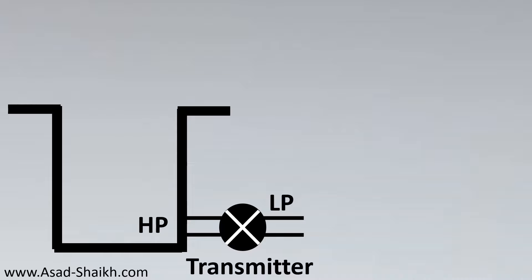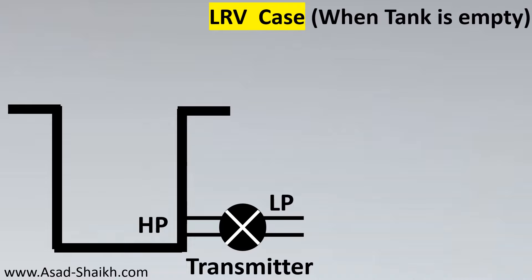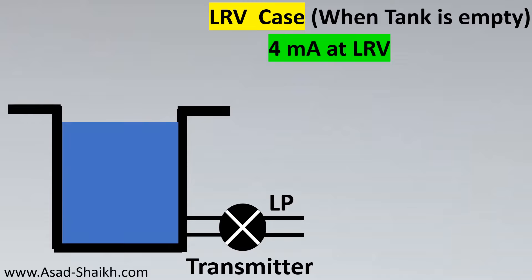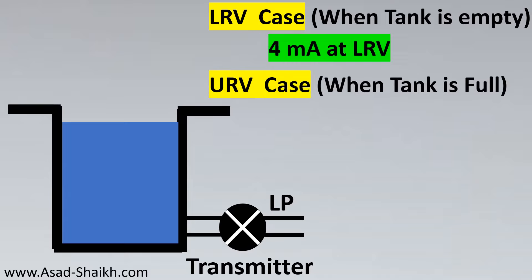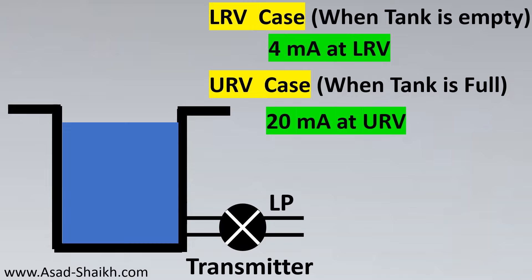To calibrate a transmitter we need two conditions. The first is called the LRV case, where the tank is empty — the transmitter should give 4 mA. The second is the URV case, where the tank is completely full — the transmitter should give 20 mA. This is our calibration range.